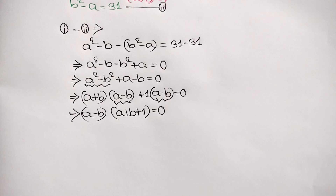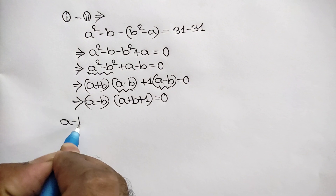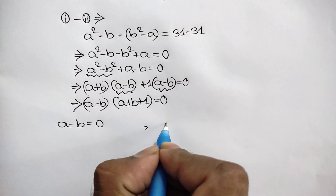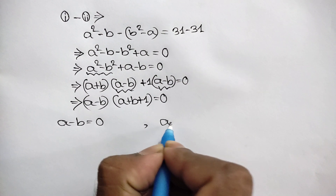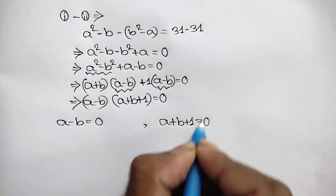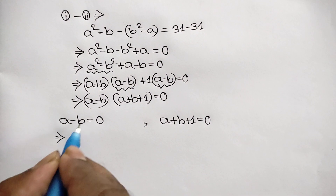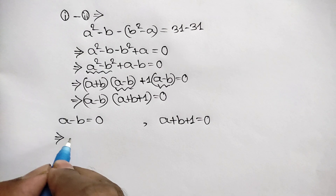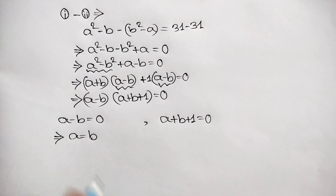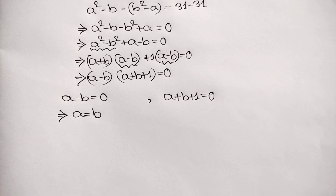There are two cases. Case number 1: A minus B equals 0, and case number 2: A plus B plus 1 equals 0. Taking negative B to the right side in case 1 gives A equals B, so A and B have the same value.